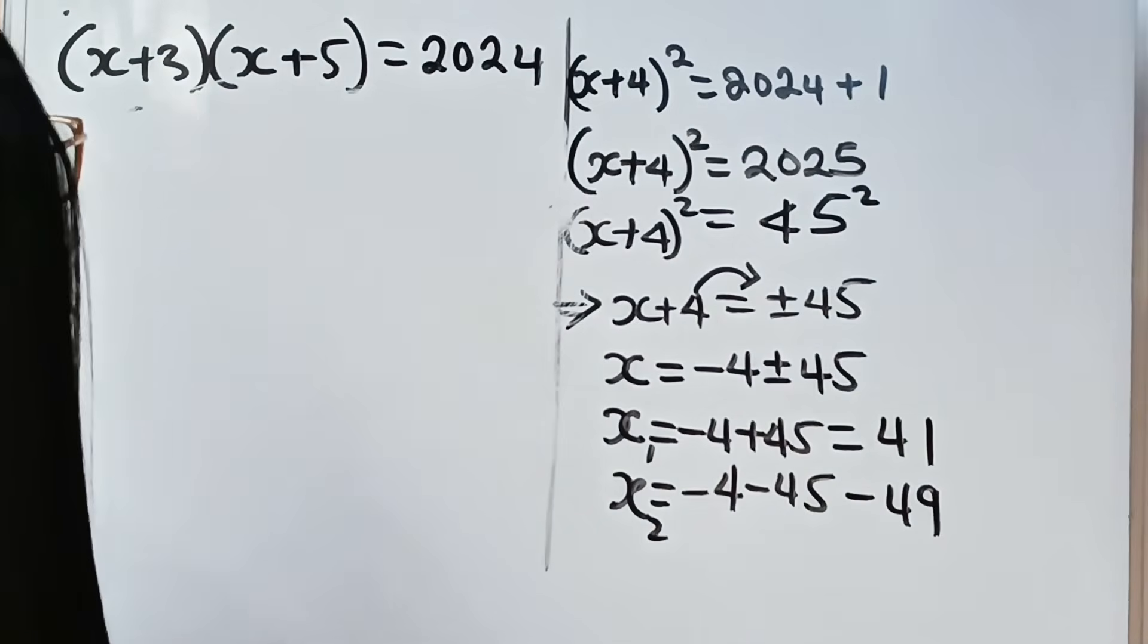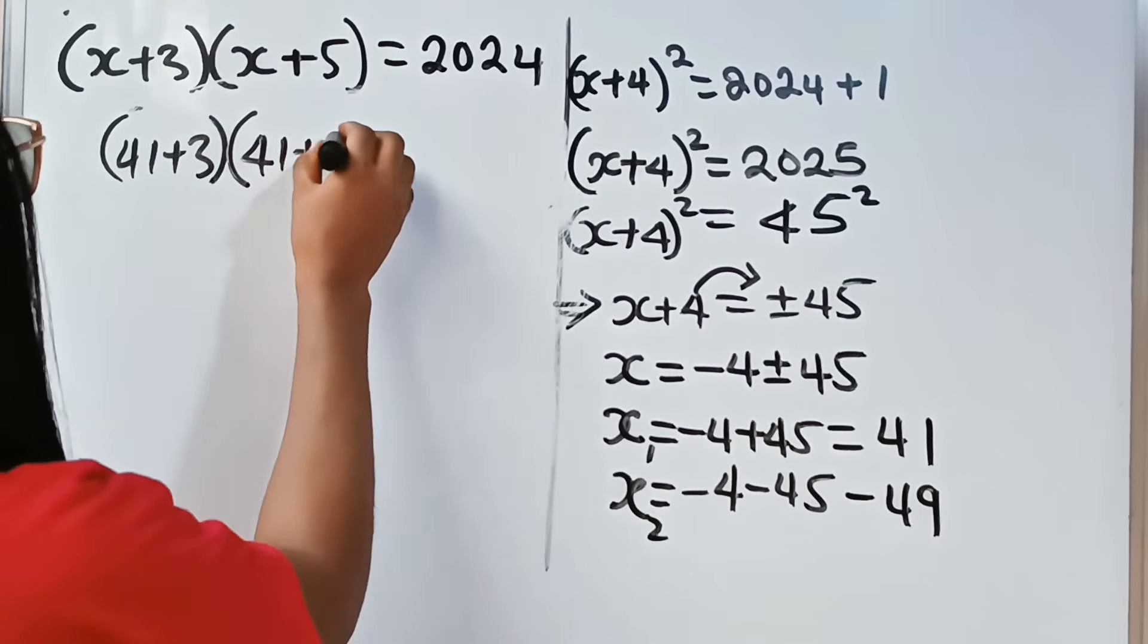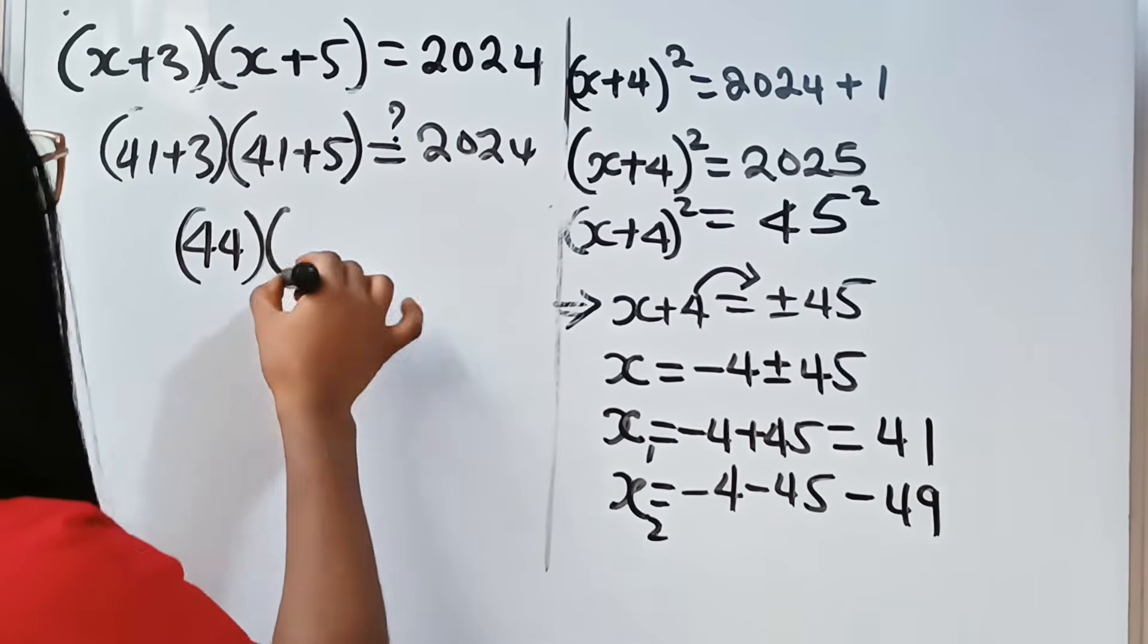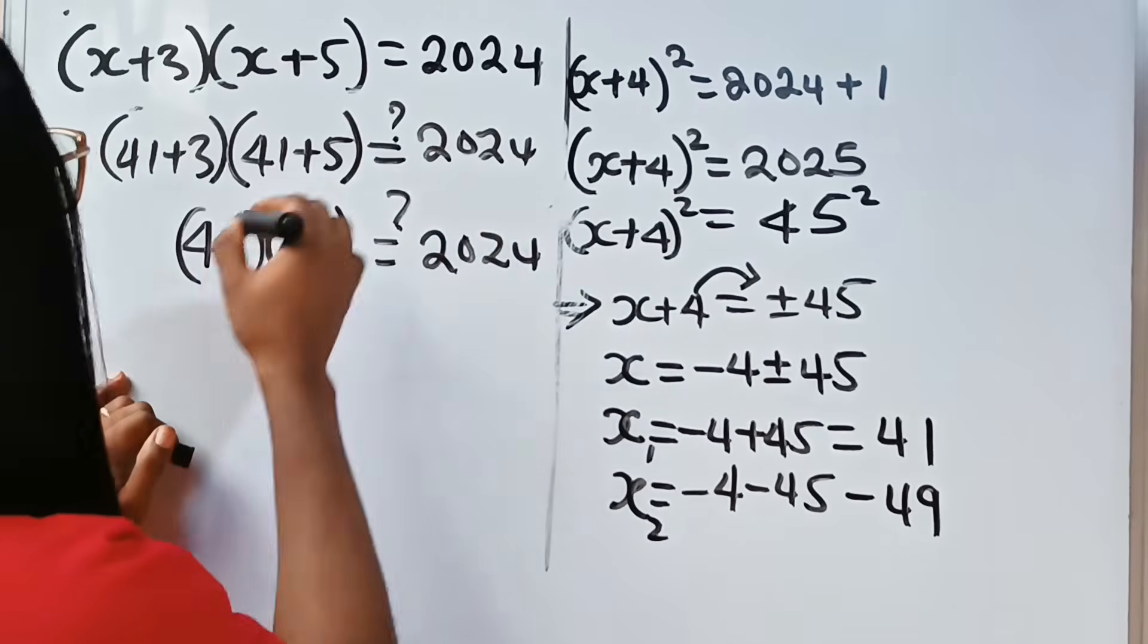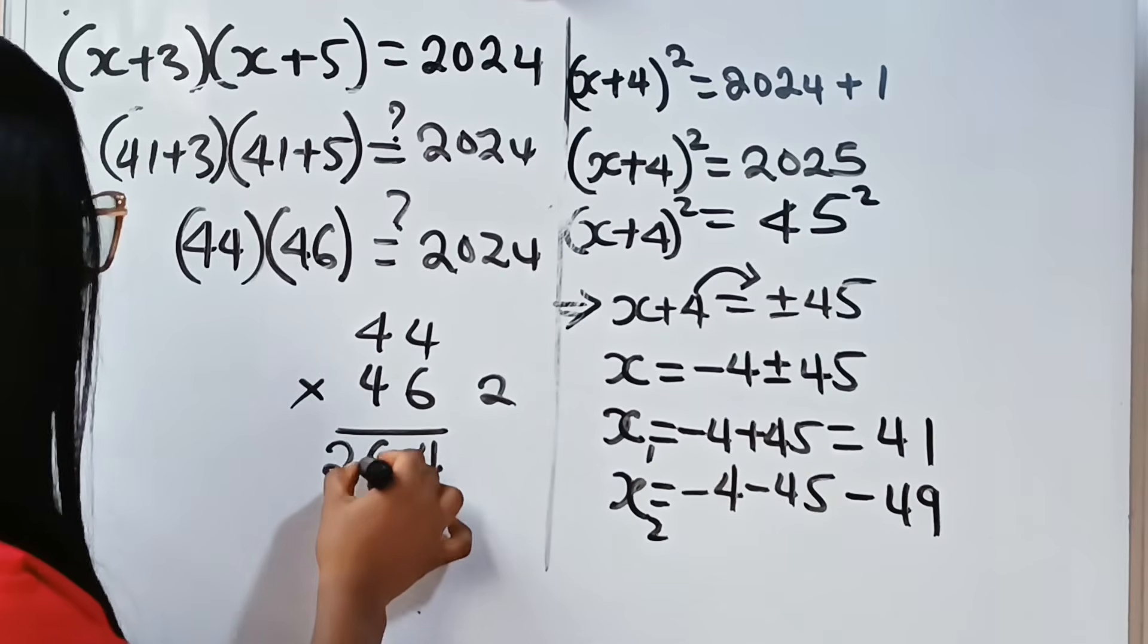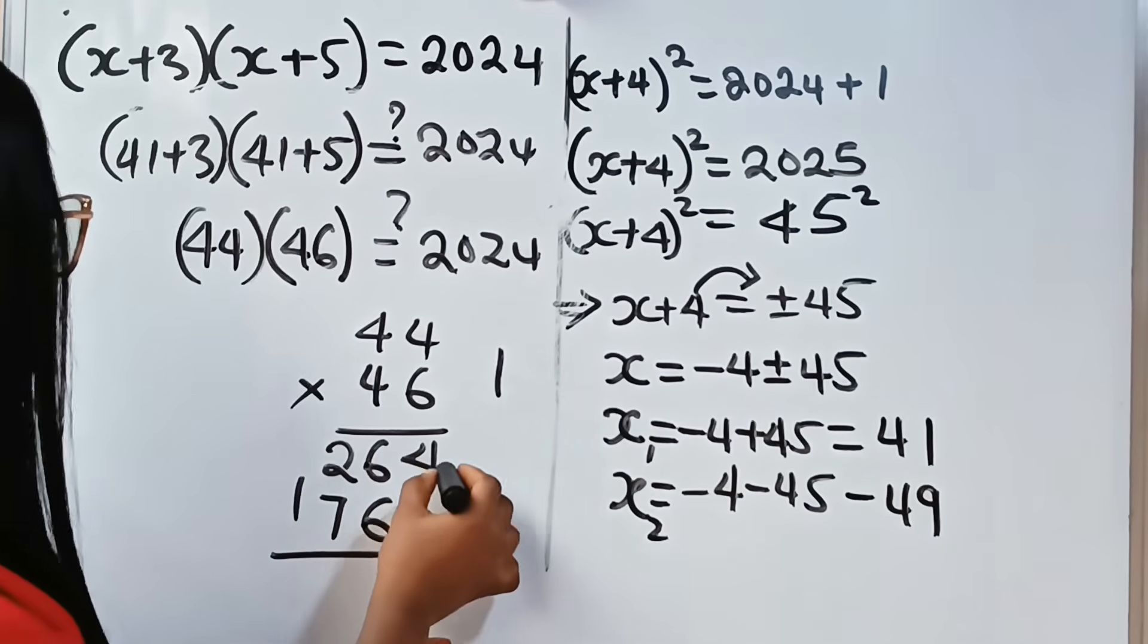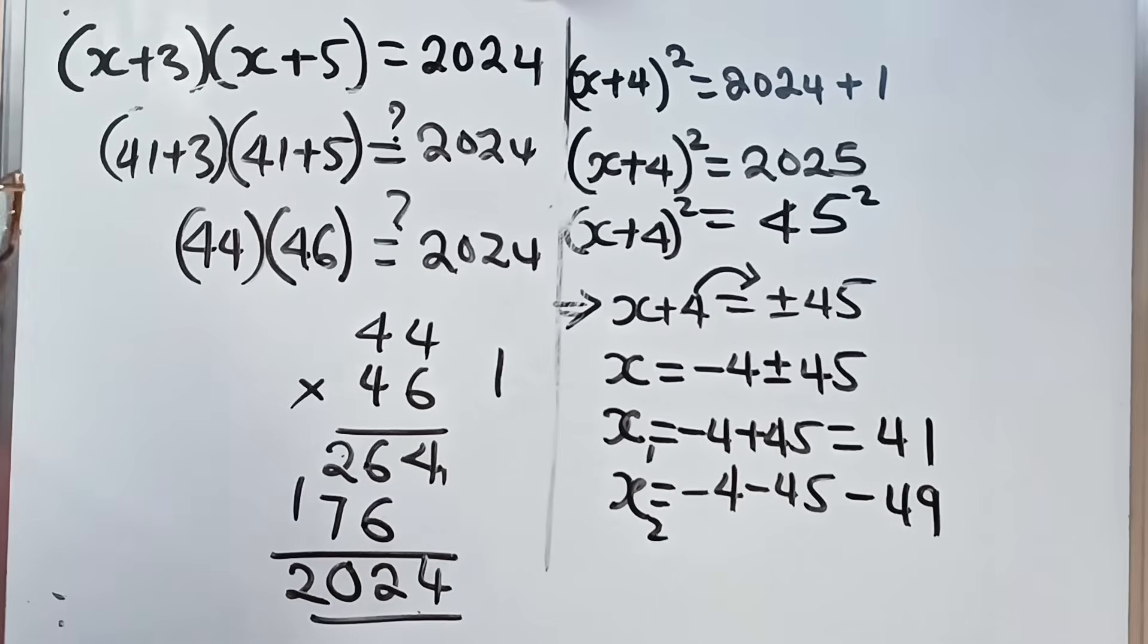When x is 41, we have (41 + 3)(41 + 5). Is this equal to 2024? 41 + 3 is 44, and 41 + 5 is 46. Let's solve 44 × 46. 6 times 4 is 24, write 4 carry 2. 6 times 4 is 24 plus 2 is 26. 4 times 4 is 16 carry 1. 4 times 4 is 16 plus 1 is 17. We add: 6 plus 6 is 12 carry 1, 1 plus 2 is 3 plus 7 is 10, carry 1. We have 2024. Therefore, 44 times 46 equals 2024.